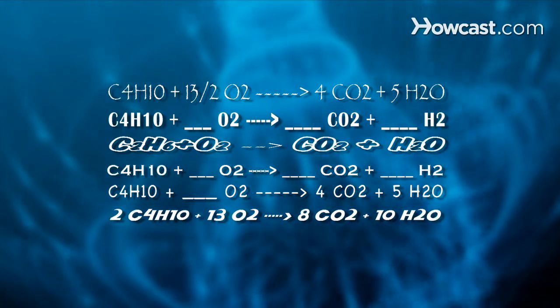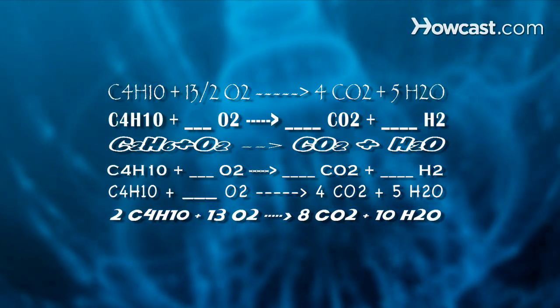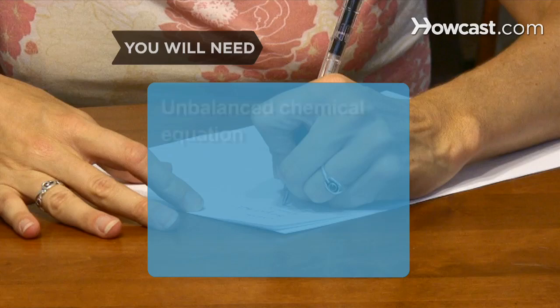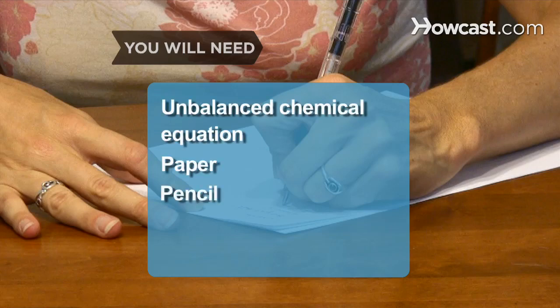When you balance a chemical equation, you account for all of the matter in the reaction. You will need an unbalanced chemical equation, paper, and a pencil.